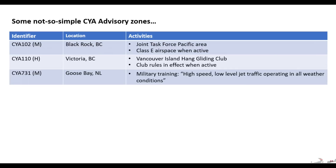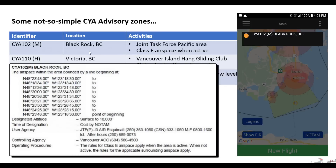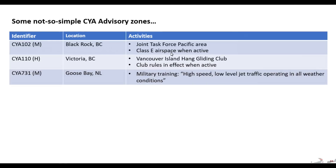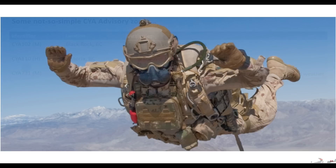There are a few exceptions to the general rule that CYA zones are class G, and I spotted these when browsing through the DAH one night. The first is CYA 102 near Black Rock, BC, which is near Victoria. It's a joint task force special training area, and when it's active it's not class G — it's class E airspace, which is controlled airspace. I would recommend you stay clear of that one; you don't want these guys dropping in on your house after they figure out where your drone is from.